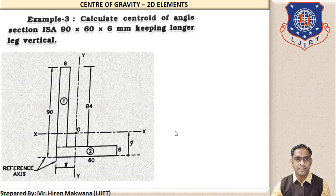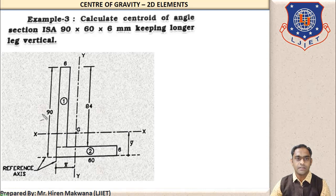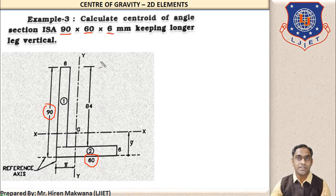Here you can see the figure. It is a rectangular angle section in L-shape. The dimension 90 mm is the total depth of the figure. The 60 mm is the width of the rectangle at the bottom. There are two dimensions of 6 mm: horizontal length 6 mm for the top rectangle and 6 mm vertical height for the bottom rectangle. This is part number 1 and this is part number 2. Now let us check the calculations.